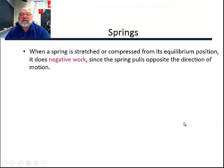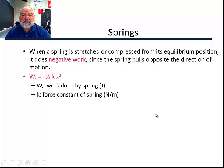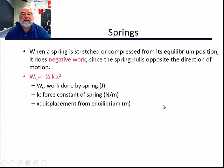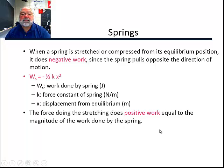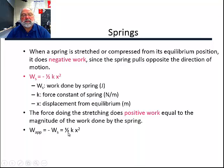When a spring is stretched or compressed from its equilibrium position, it does negative work, since the spring pulls opposite the direction of motion. The work done by the spring is negative one-half k x squared — work in joules, k is the spring constant in newtons per meter, and x is the displacement from equilibrium. The force doing the stretching — your pull — equals the magnitude of the work done by the spring but is positive, since you apply force in the direction the spring is stretching. So you do positive work; the spring does negative work. The work applied is one-half k x squared.